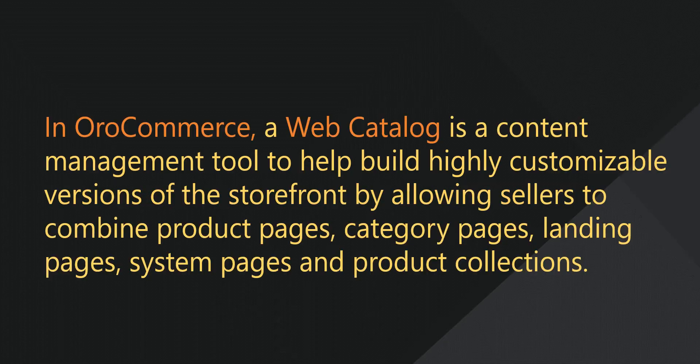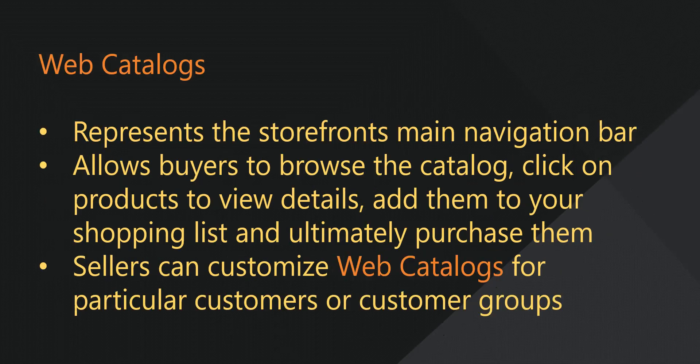In OroCommerce, a web catalog is a content management tool that helps you build highly customized versions of your storefront by allowing you to mix category pages, product pages, pre-existing system pages, and more. The web catalog represents the website's main navigation bar. Web catalogs allow buyers to browse this collection of products, click on them to view details, add them to your shopping list, and ultimately purchase them.